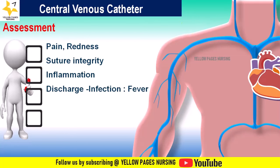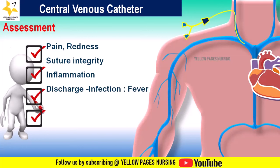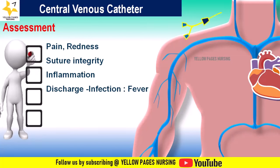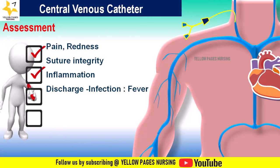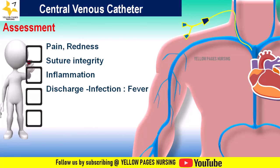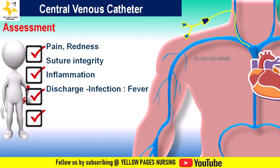Fever can be a sign of infection at the venous site, which could also be indicated by purulent discharge, redness, warmth, and tenderness. Infection mainly occurs at the insertion site if it is not cleaned and disinfected properly, which may lead to bacterial contamination. Next is assessment of patency, which refers to the unobstructed flow of fluids through the central venous catheter.